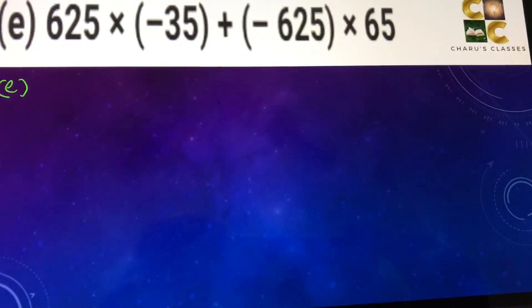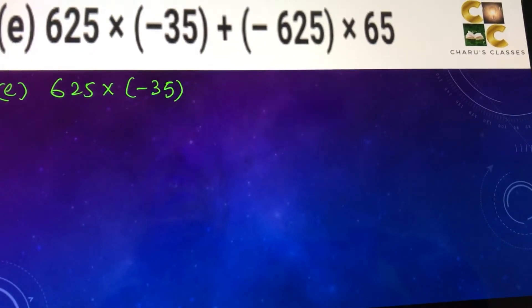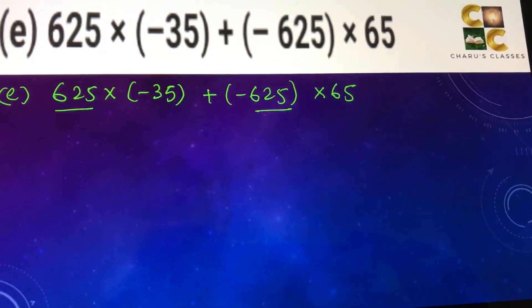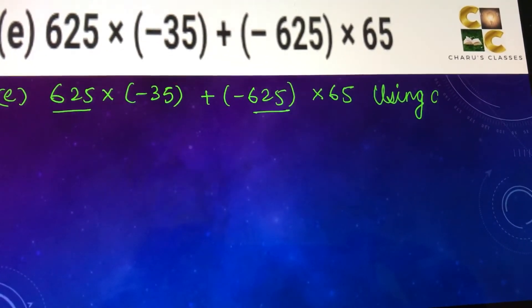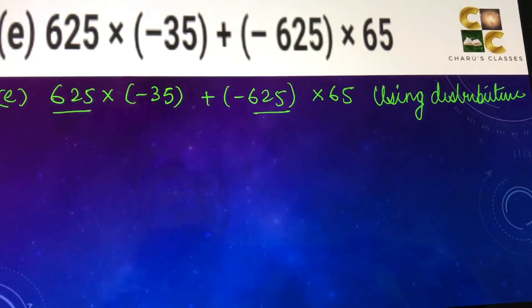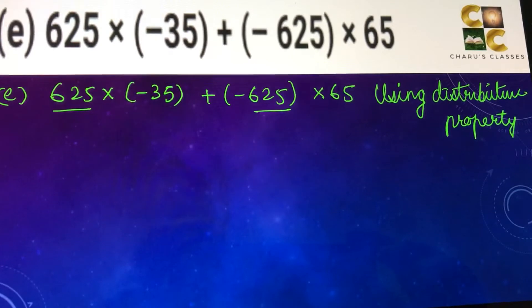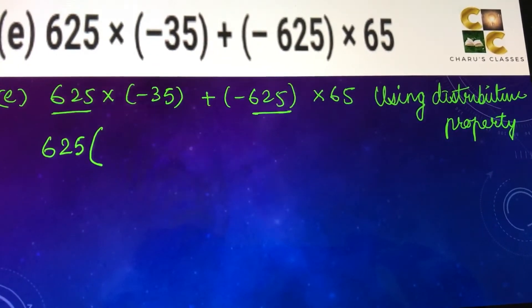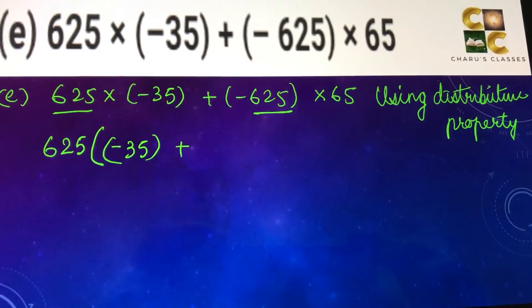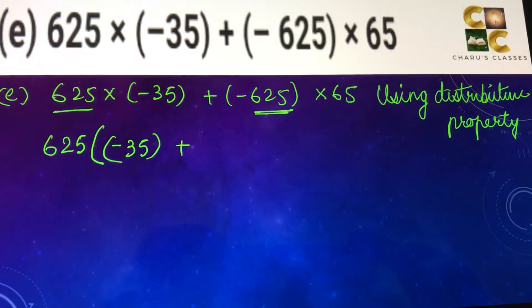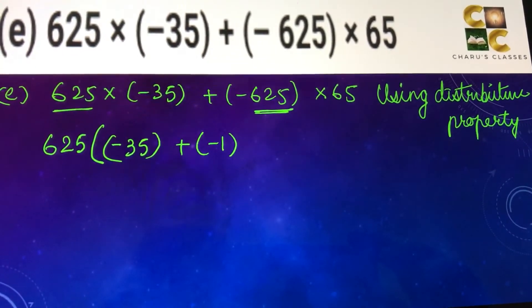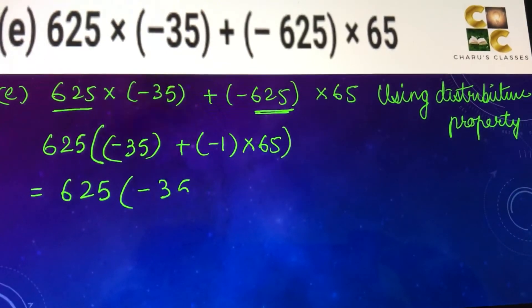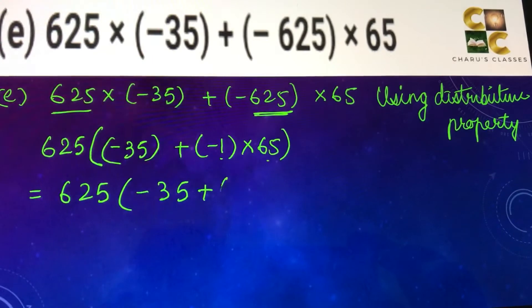Part e: 625 into minus 35 plus minus 625 into 65. Since 625 is present in both terms, we are going to use distributive property and take it as common. Here it is 625 and here it is minus 625. Taking 625 as common, we are left with minus 35 plus, and since we took 625 as common, minus 1 will be left — because minus 1 into 625 is minus 625. So this is 625 into minus 35 plus minus 1 into 65, which is minus 65.